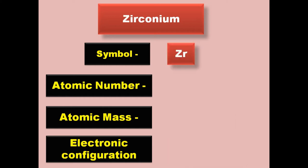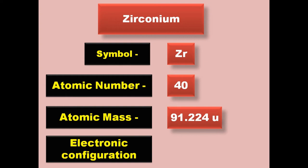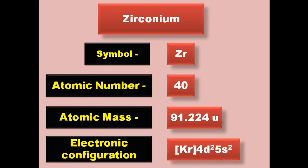Zirconium has symbol Zr, atomic number 40, atomic mass 91.224, electronic configuration [Kr] 4d2 5s2. Zirconium is a transition metal and exists in solid form at room temperature.